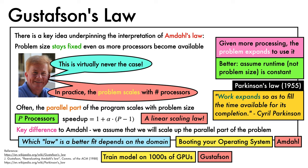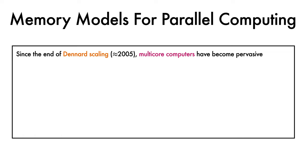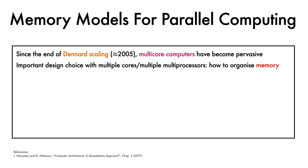In fact, even in the case of booting your operating system, Gustafson's law suggests that the boot time may stay fixed, but you will ultimately make use of all available processors to boot a stronger, more capable machine. We saw earlier that since the end of Dennard scaling, multi-core computers have been on the rise. A major design choice for computers with multiple cores is how to organise memory. There are, broadly speaking, two strategies: the first is shared memory.